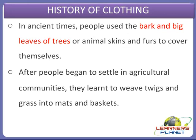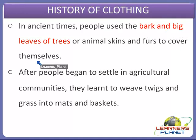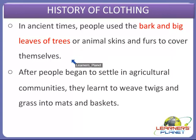So basically, I want to discuss where we get these materials from — the materials which form the clothes and protect us from various extreme weather conditions. We will discuss about these materials later on. Before that, we should know the evolution of clothing — that means we are now going to discuss about the history of clothing. In ancient times, people used the bark of trees, big leaves of trees, or animal skins and furs to cover themselves, because at that time there were no cloths available for them.